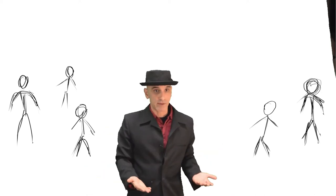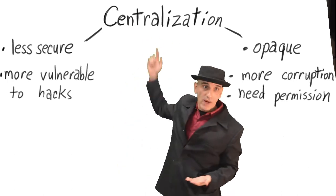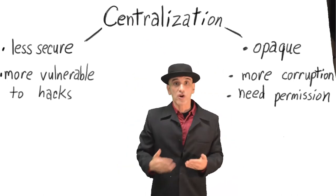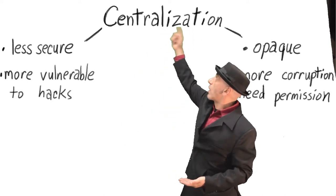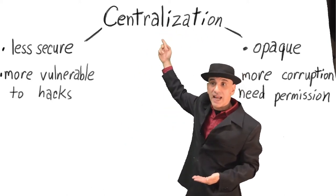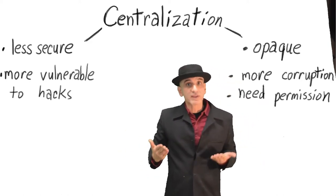You might ask why this is important. Well, several reasons. One of them is security. When you have the center point, it's a center point of failure where somebody can hack it, or a corrupt person in the center can change the data and we don't have control. That's a main point of centralization.